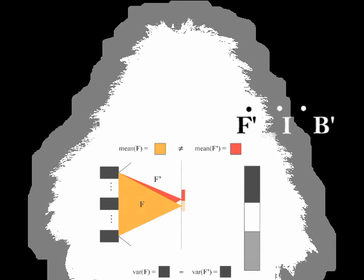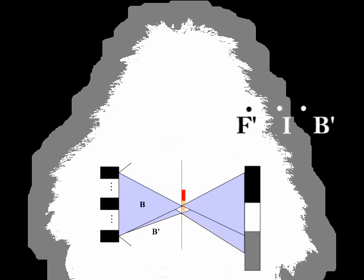We estimate f and b using f prime and b prime, which we can get from nearby points in our trimap. We estimate f by assuming that the variance of f is equal to the variance of f prime. This only assumes that the view-dependent properties such as specularity are the same, while the view-independent properties such as diffuse color can be completely different. This allows our method to work for foreground objects with high-frequency content. To estimate b from b prime, we note that the distribution of points sampled by b heavily overlaps with those of b prime. Thus, we can reliably compute any statistics of b from this overlapping region, which is quite large in practice.